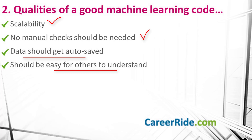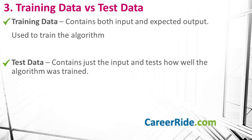Moving on to the next question: What is the difference between train data and test data? When you want to create a supervised learning algorithm, you use training and test data sets. The training data set contains both the input and the expected output — it is used to train the algorithm. The testing data set contains just the input and examines how well the algorithm was trained. During the process, you have to be careful that your test data doesn't leak into the training data; otherwise, while the algorithm might perform very well during training and testing, it can fail miserably in real-life situations.